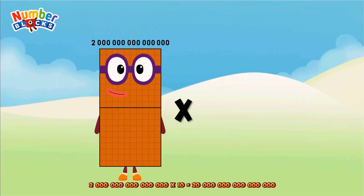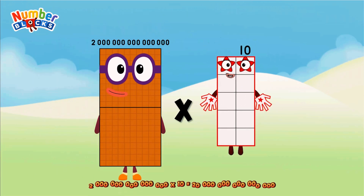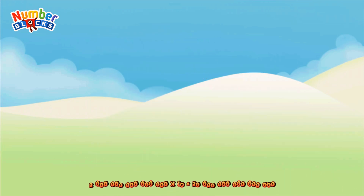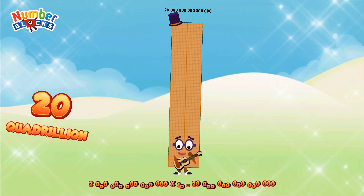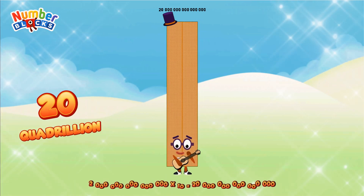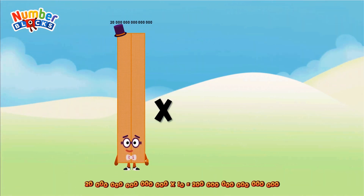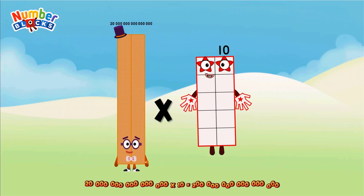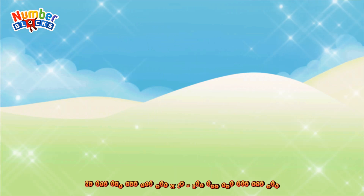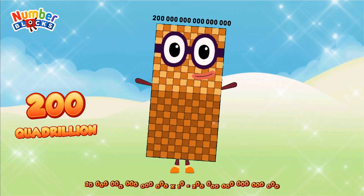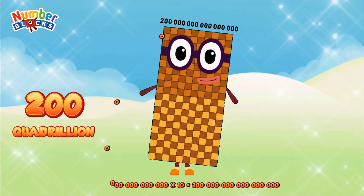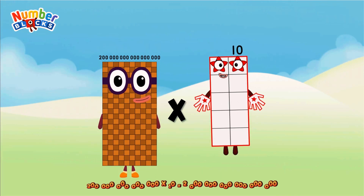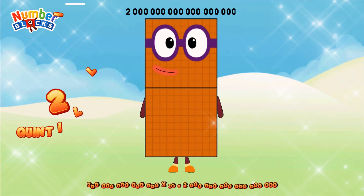Two quadrillion multiplied by ten equals Twenty quadrillion. Twenty quadrillion multiplied by ten equals Two hundred quadrillion. Two hundred quadrillion multiplied by ten equals Two quintillion.